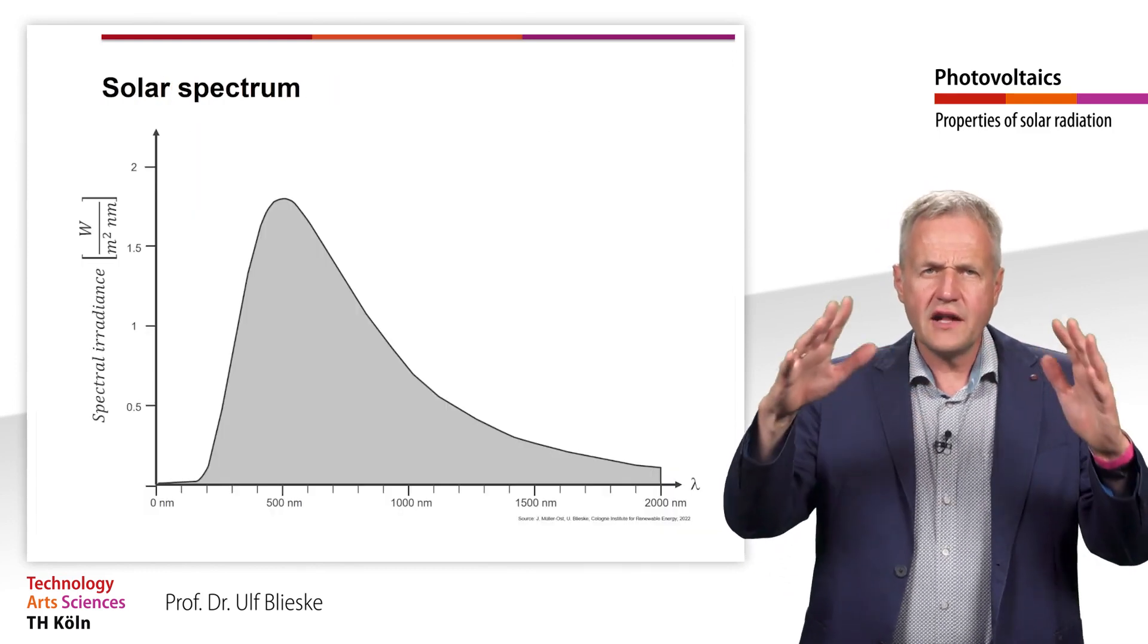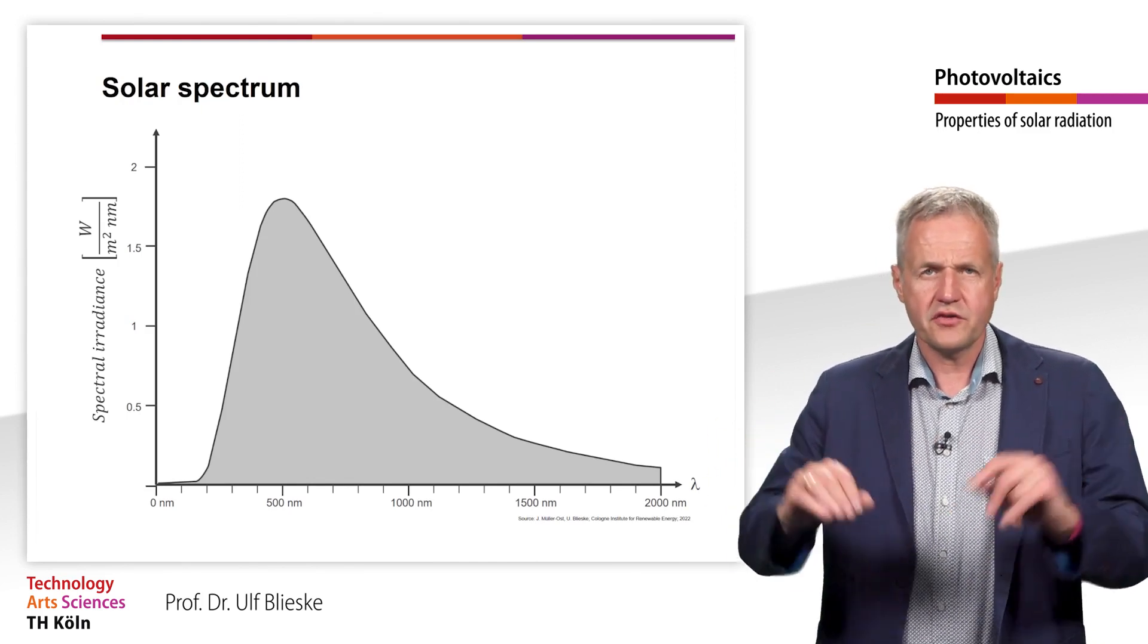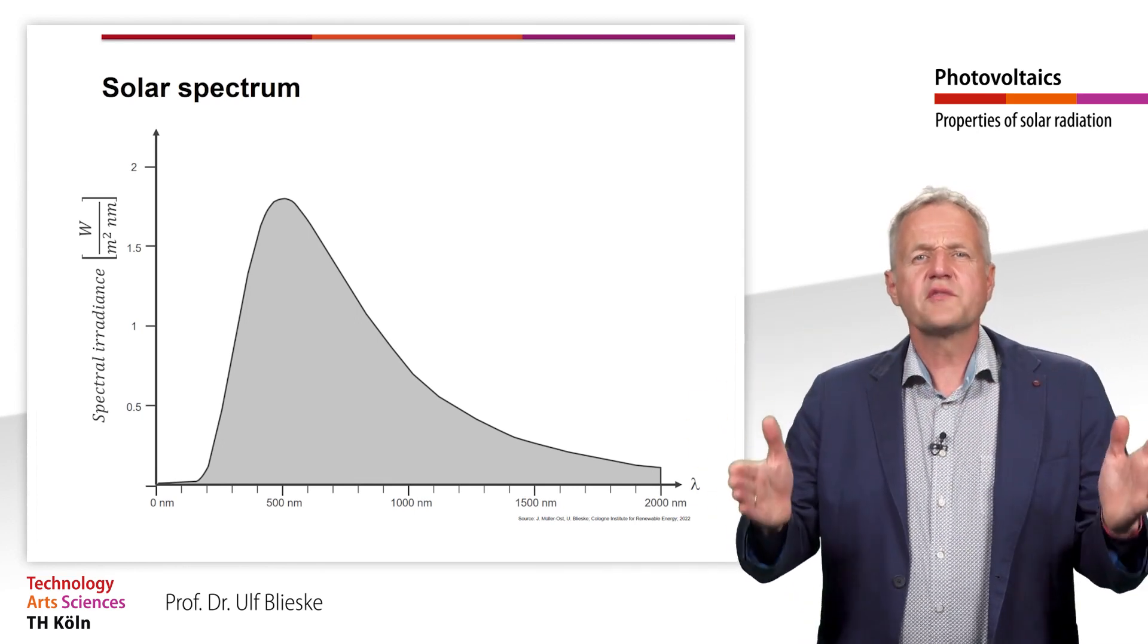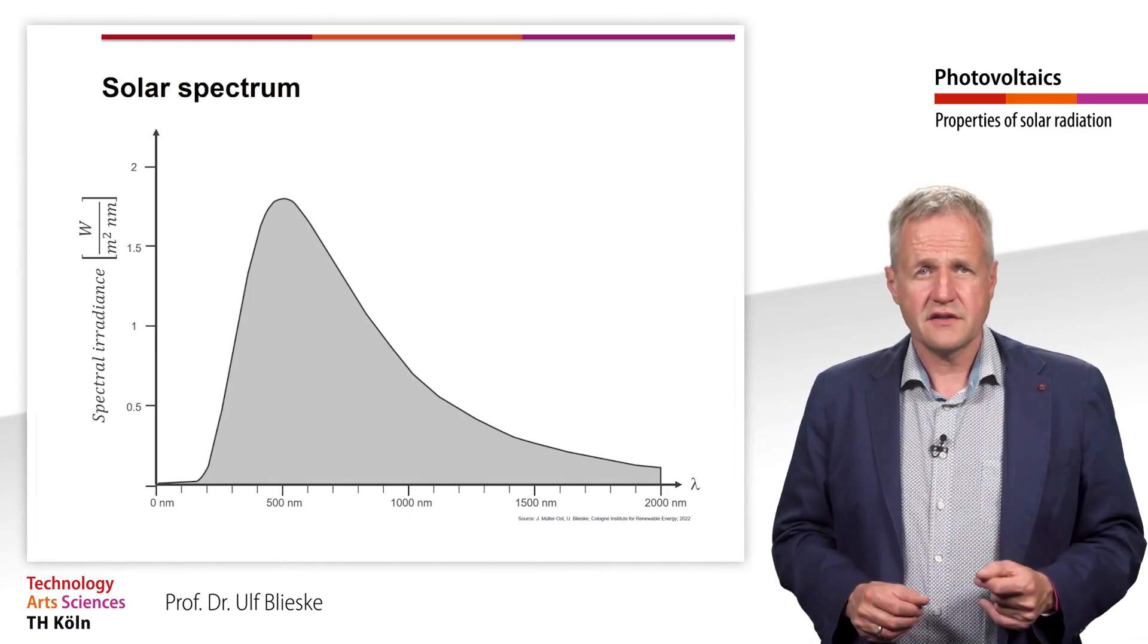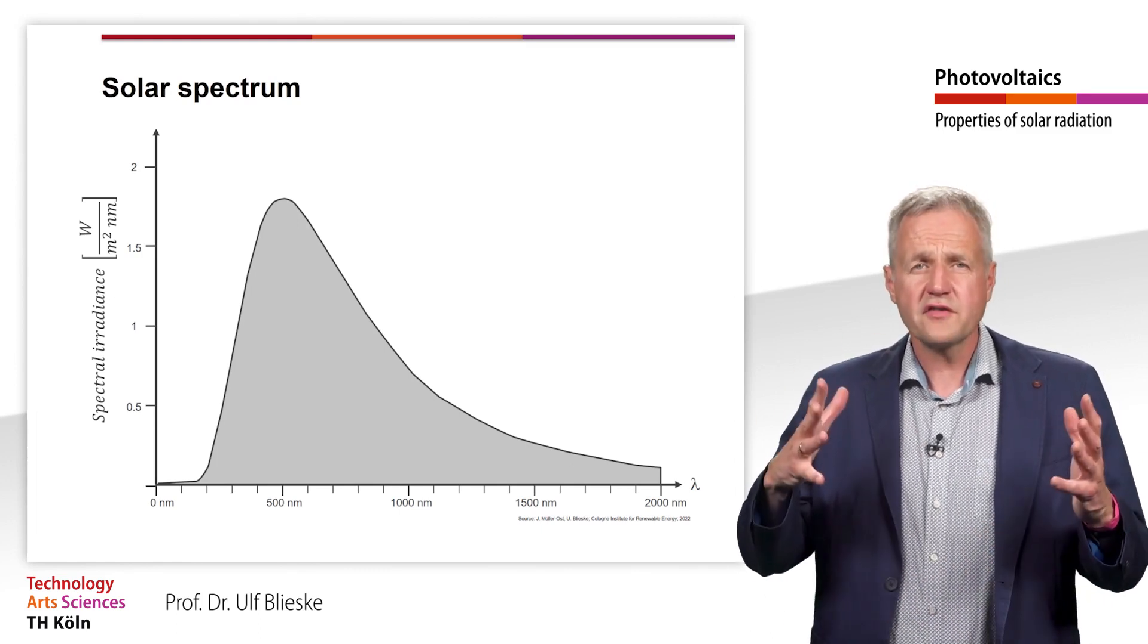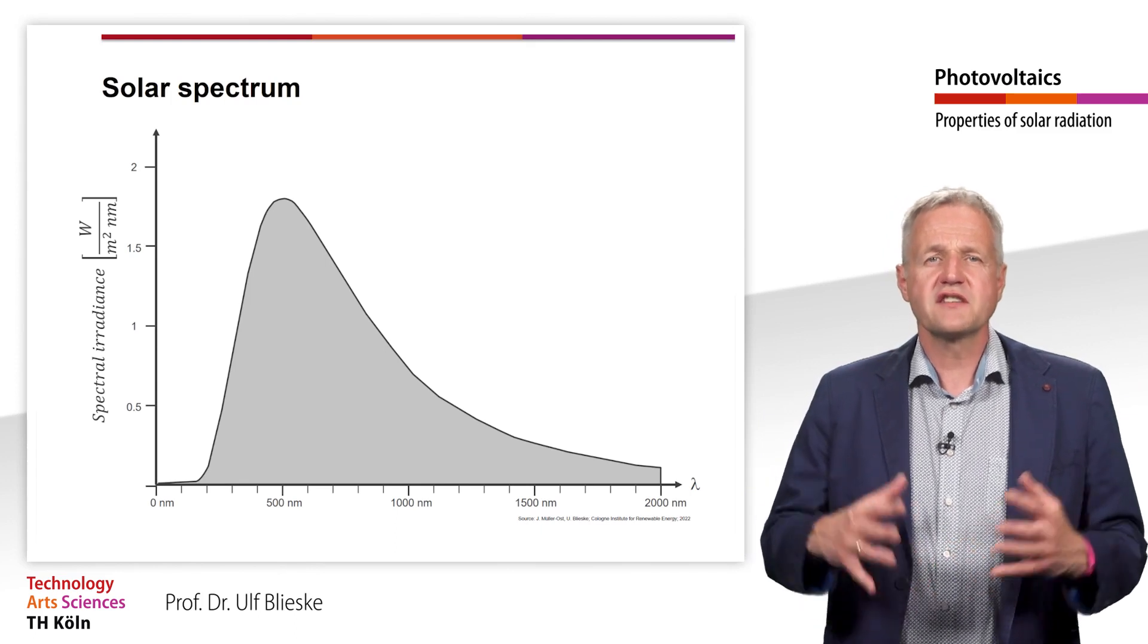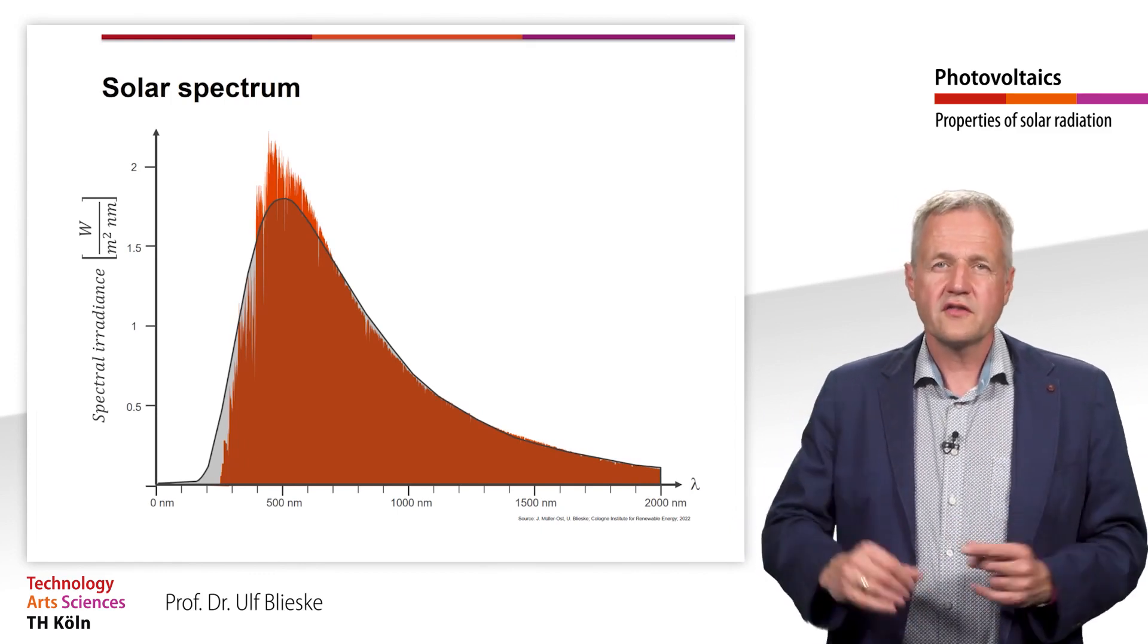You see here the spectrum resulting from the considerations of the last slides for the solar radiation above the earth's atmosphere. We assume that the sun is an ideal black-body radiator. The integral over all wavelengths corresponds to the solar constant of 1367 W per square meter just calculated. In fact, of course, the sun is not an ideal black-body radiator because it both absorbs and reflects light. However, if we look at the actual spectrum of solar radiation in space, we see that our assumptions are a good first approximation to describe the solar spectrum.